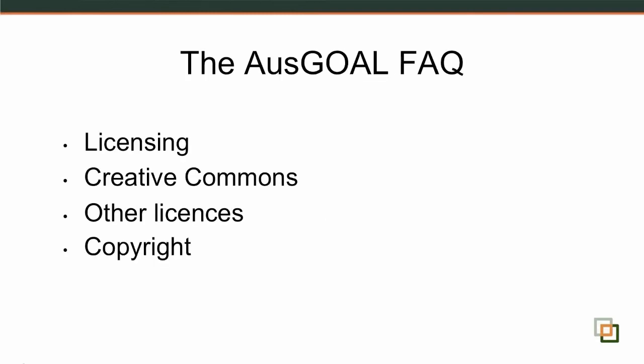The Ausgold FAQ is divided into four sections: licensing in general; Creative Commons in particular, because the Ausgold framework uses Creative Commons as the basis for most of its licences; a section on other licences, which is quite small since for the most part people aren't using many other licences except for things like software; and a final section about copyright — when does copyright subsist in data, what happens if it doesn't, that kind of thing.